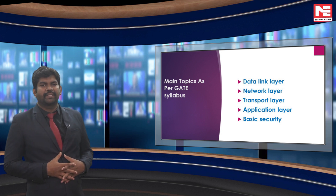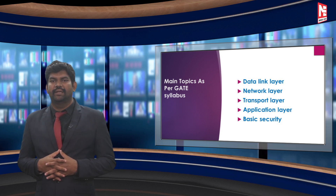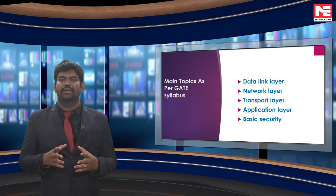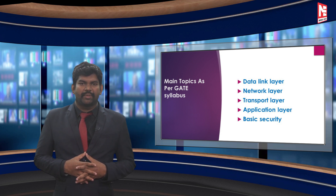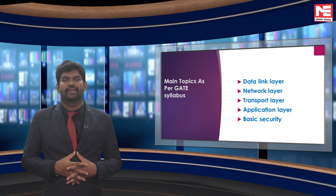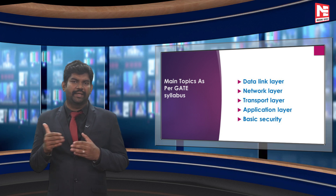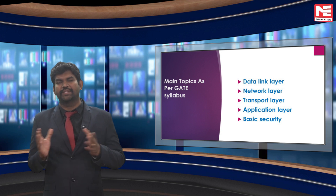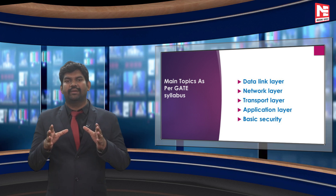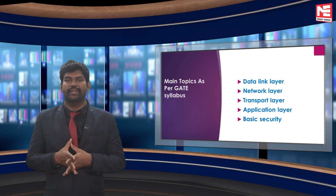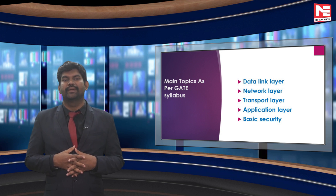The main topics of Computer Networks as per the GATE are: data link layer, network layer, transport layer, application layer, and some basic security. Computer Networks means the flow of data from end to end, from system to system, passing via networking devices — similar to what you learn inside a single computer passing from CPU to different memory devices, but applied to the internet.